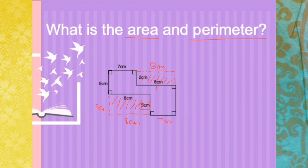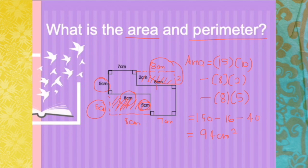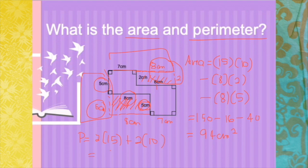So to find your area for the shape, the area of the bigger shape would be 15 times 10 — that's 5 and 5, so that's 10 — minus the smaller shape here which is 8 by 2, so minus 8 times 2; minus the shape on the side which is 8 by 5, so minus 8 times 5. So 15 times 10 is 150, minus 8 times 2 is 16, minus 8 times 5 is 40. Therefore the area is 94 cm square. For the perimeter, extended that's 10 and we have 15, so the perimeter will be 2 of your 15 plus 2 of your 10, giving us 50 cm.